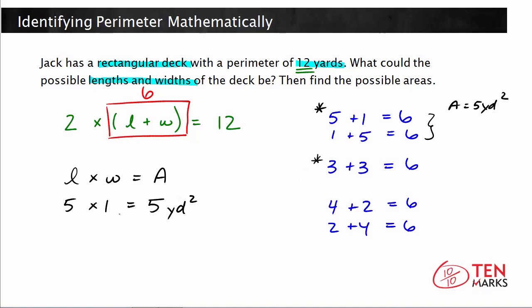Now let's take a look at this next one here, 3 times 3. Length times width equals 9. So if he had a deck with 3 yards by 3 yards, his area of the deck would be 9 yards squared.